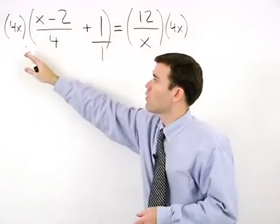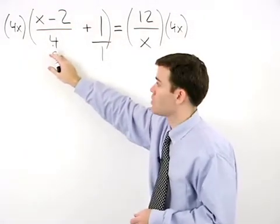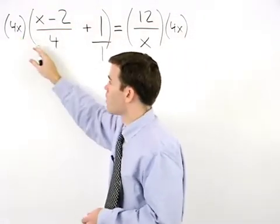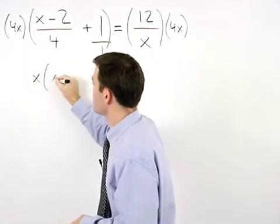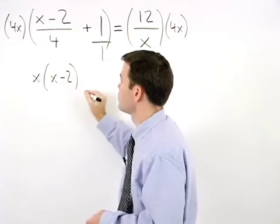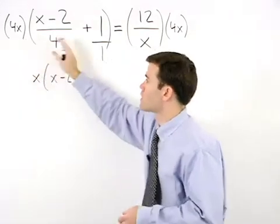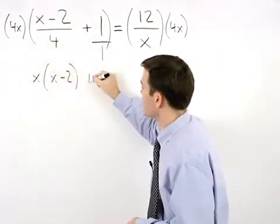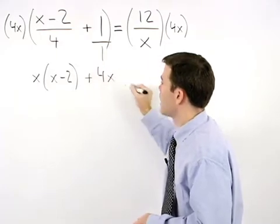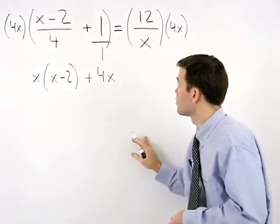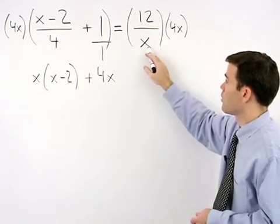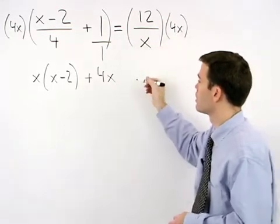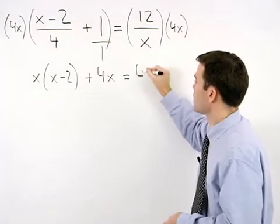When multiplying 4x times x minus 2 over 4, the 4s cancel and we have x times parentheses x minus 2. 4x times positive 1 is positive 4x. And when multiplying 4x times 12 over x, the x's cancel and we have 12 times 4 or 48.